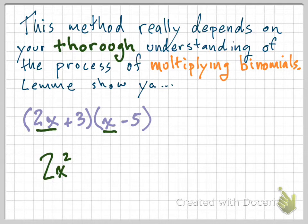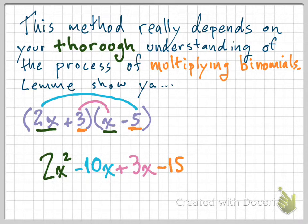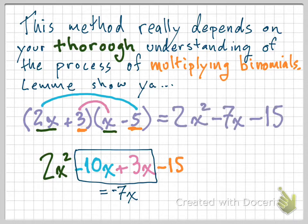And then maybe the next thing, or at least one of the next things, would be 2x times negative 5. That's negative 10x. And 3 times x might be the next thing you do. That's 3x. And finally, 3 times negative 5, which gives you negative 15. But you're not done yet, of course. You have to combine those middle terms together. In this case, we get negative 7x from doing that. And finally, we're ready to show our answer, 2x squared minus 7x minus 15.